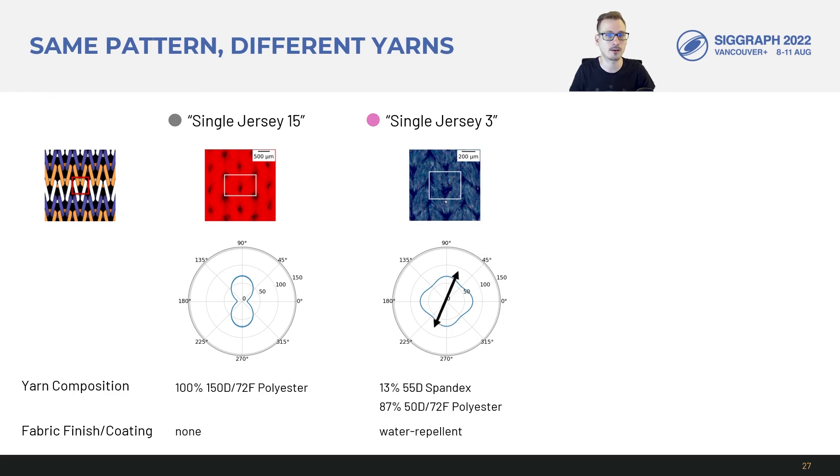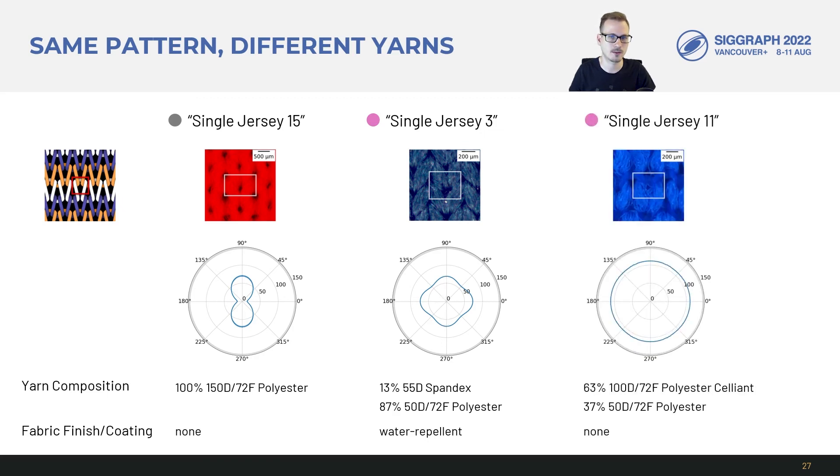This single jersey 3 has the same pattern but it has plated yarns combining spandex and polyester. And as a result it has a surprisingly isotropic response.